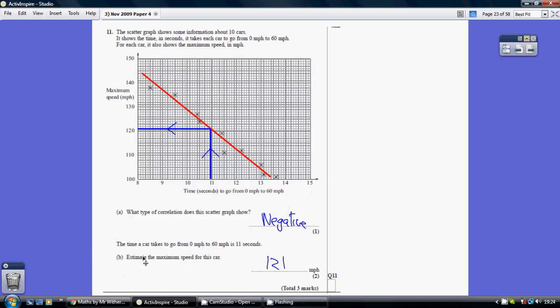Now, important for part B, estimate the maximum speed for this car. You can't just take a judgment call and say the point's roundabout here. You have to use a line of best fit.